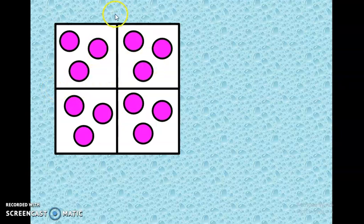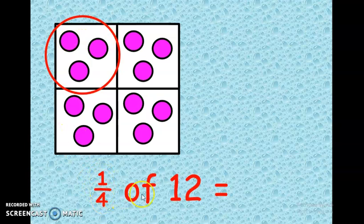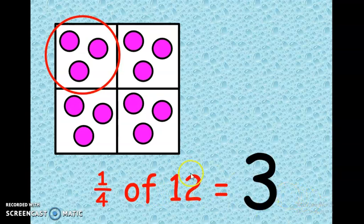You'll find that in one box — which means in one quarter — there are 3 marbles. A quarter means 1 of the boxes. So a quarter of 12: choose 1 box and count — 1, 2, 3. So what is a quarter of 12? We count and write our answer as 3. A quarter of 12 is 3.